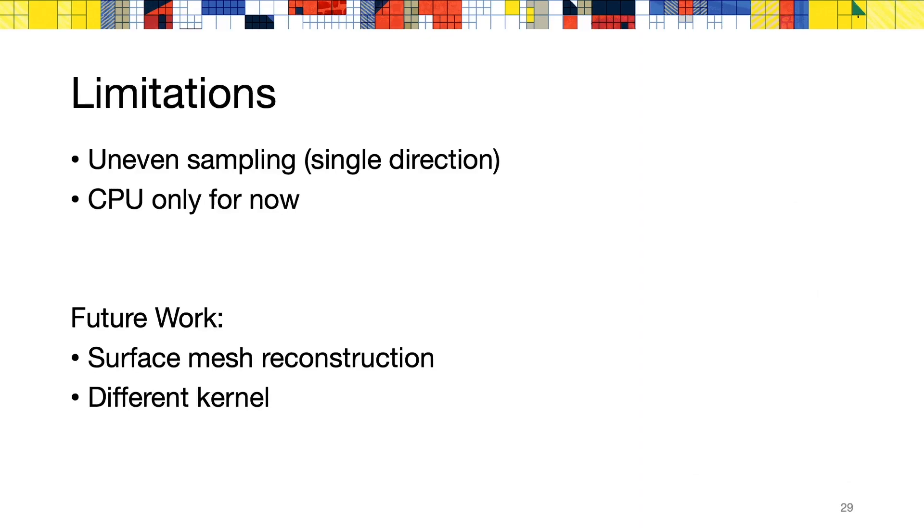There are a few limitations to our method. Primarily, the uneven sampling might be an issue if your goal is to extract an offset surface for other applications. Our implementation is also CPU only for now, although it could be extended to the GPU. As future work, we can imagine combining this method with better surface reconstruction methods in order to extract a final triangle mesh. And finally, our work only covers the dilation with a ball, and it would be interesting to consider other structuring elements for the morphological operations.